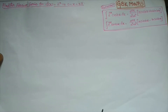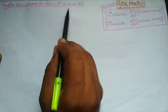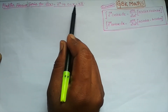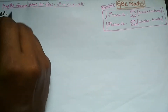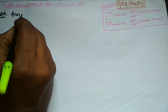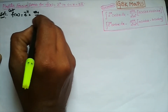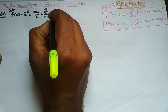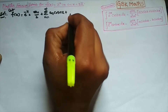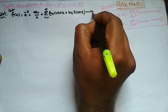Hi students. Now I am taking another problem of Fourier series. The question is: find the Fourier series for f(x) = e^(−x) in the interval 0 < x < 2π. So let us go with the Fourier series formula: e^(−x) = a₀/2 + summation n=1 to infinity of aₙcos(nx) + bₙsin(nx), which is called equation number 1.